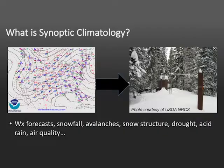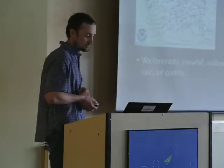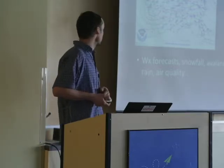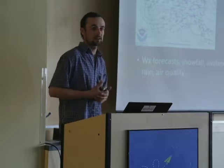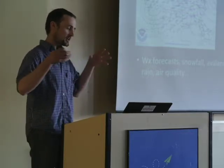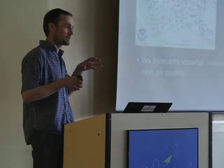This kind of thing has been done a bunch of times before. People have used it as a proxy for weather forecasts, to estimate snowfall, try to predict different kinds of avalanches and snow structure. And as well as outside of the field of snow and avalanches, we look at drought, acid rain events, air quality. I'm not reinventing the wheel here by any means — I'm just taking what's already been done and trying to focus it right here at Bridger Bowl, looking at deep slab avalanches.